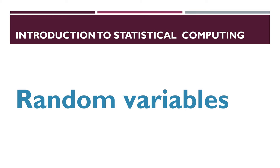In this video I will give only a basic introduction; the second video will cover the topics in detail. A random experiment is any act whose outcome cannot be predicted in advance. Any outcome of a random experiment is known as an event.